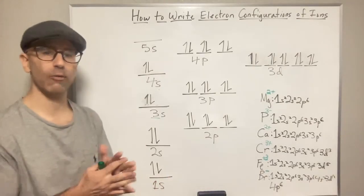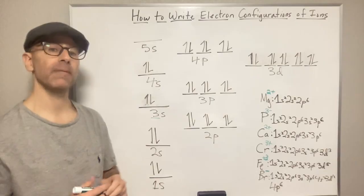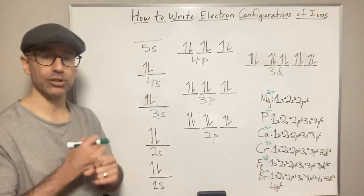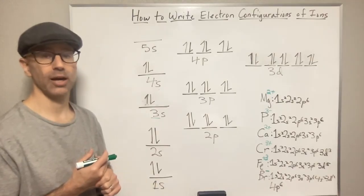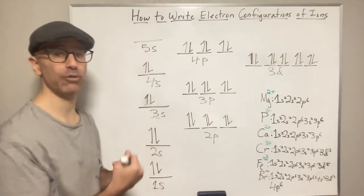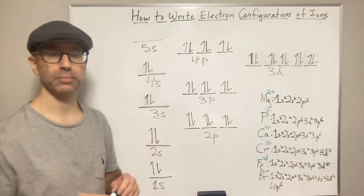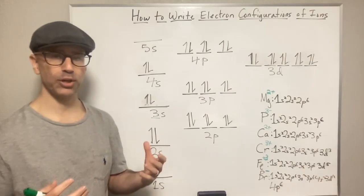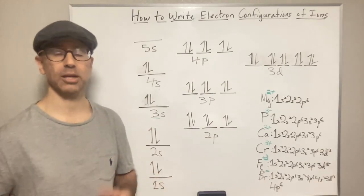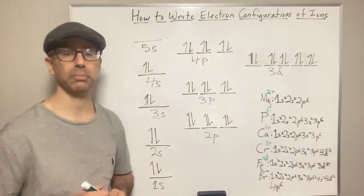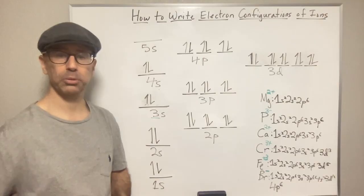So that's it for this video. I hope that is helpful for writing the electron configuration for ions. You've got to be really careful about the transition elements — remember that you're going to remove electrons first from the highest energy level, so especially for the transition elements, that's going to be the S orbital first, and then if you still need to remove electrons, you start removing from the D sub-level. Please make sure you hit that like button, share this video, subscribe to my channel, and ask me some questions down below. Thanks for joining me — have a great day.